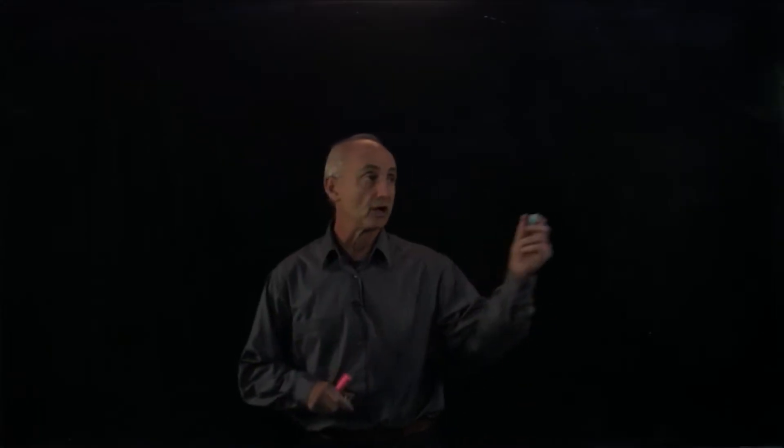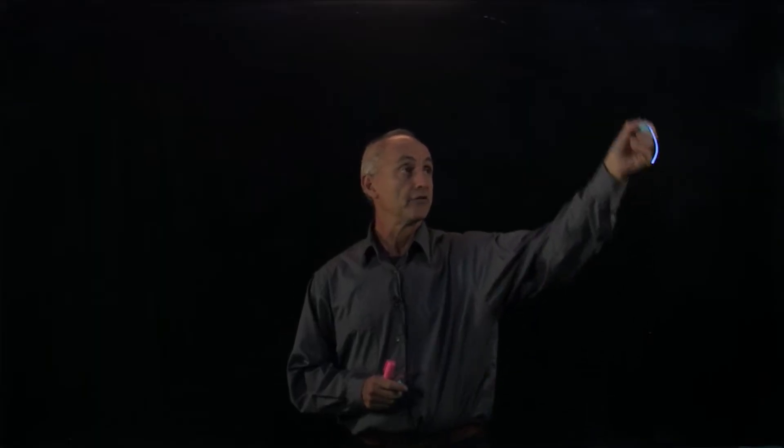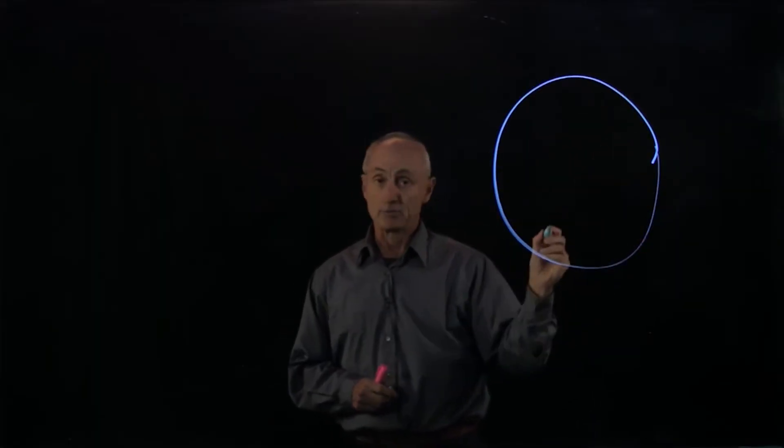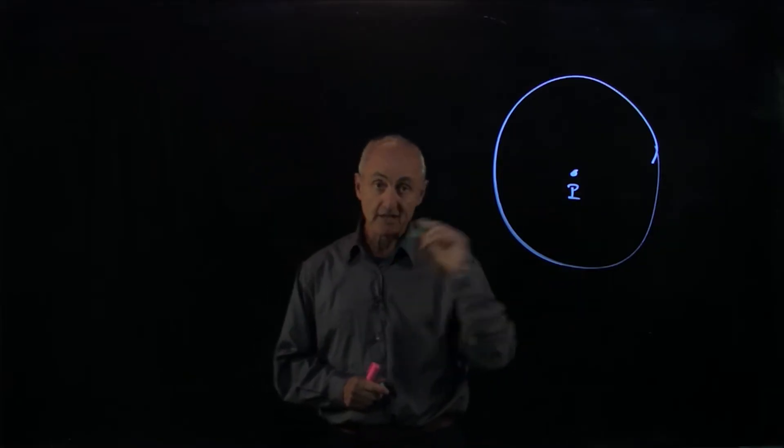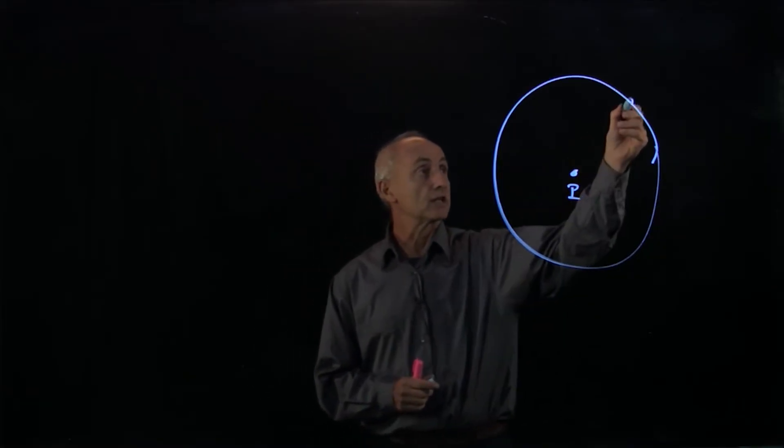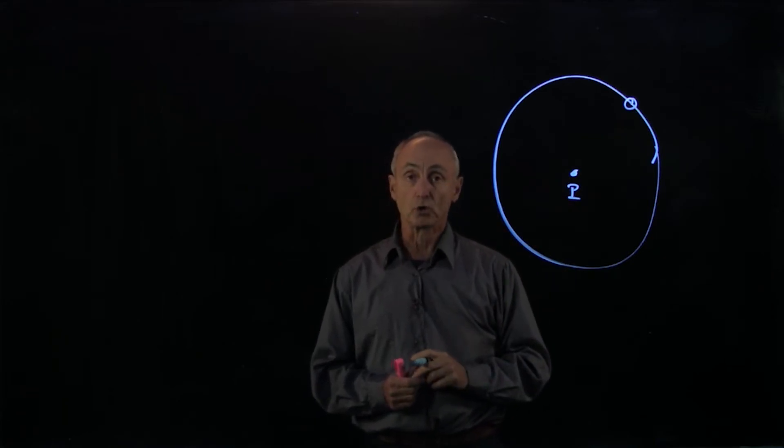Let's consider the orbit of an object. For instance, a circular orbit. We have a circular orbit of an object with a central point, which we'll call P. Given this type of motion, it naturally makes sense to choose a coordinate system called polar coordinates.